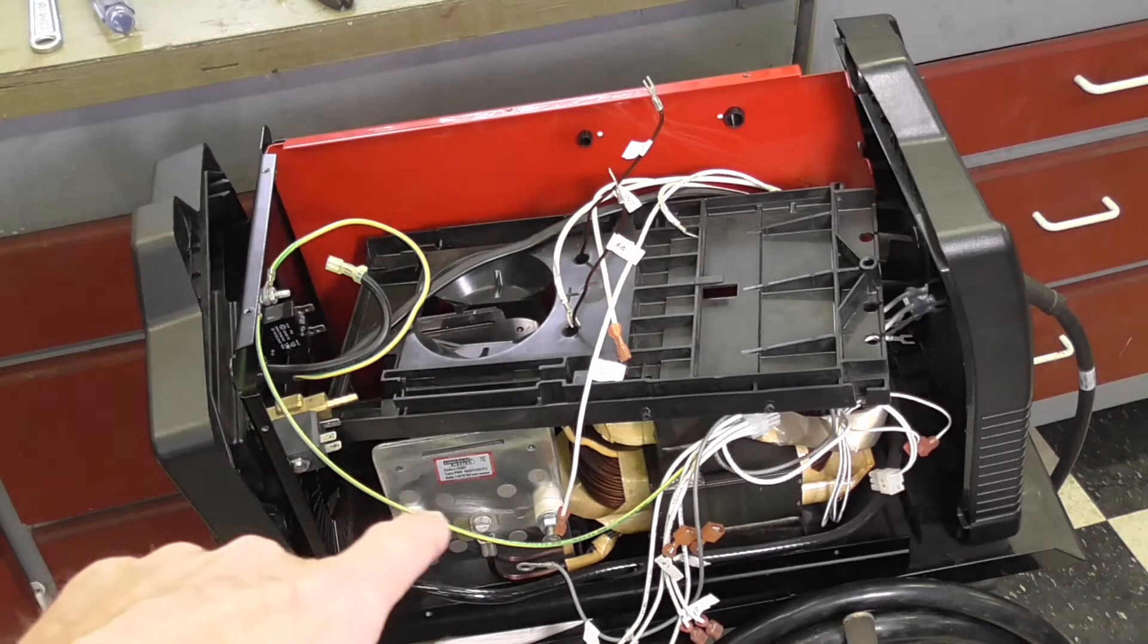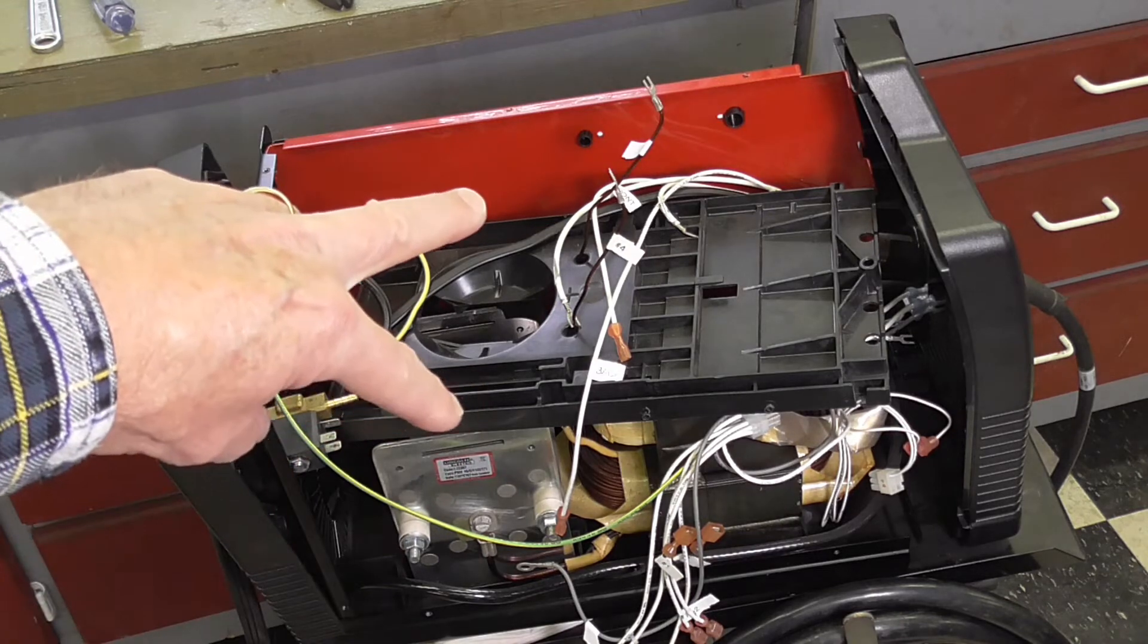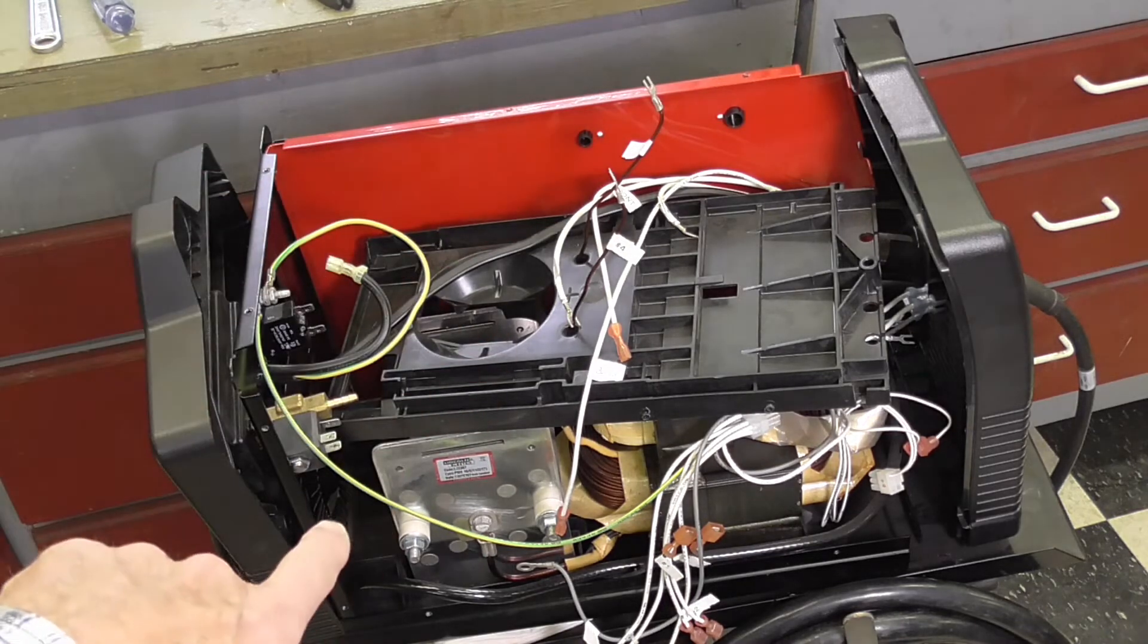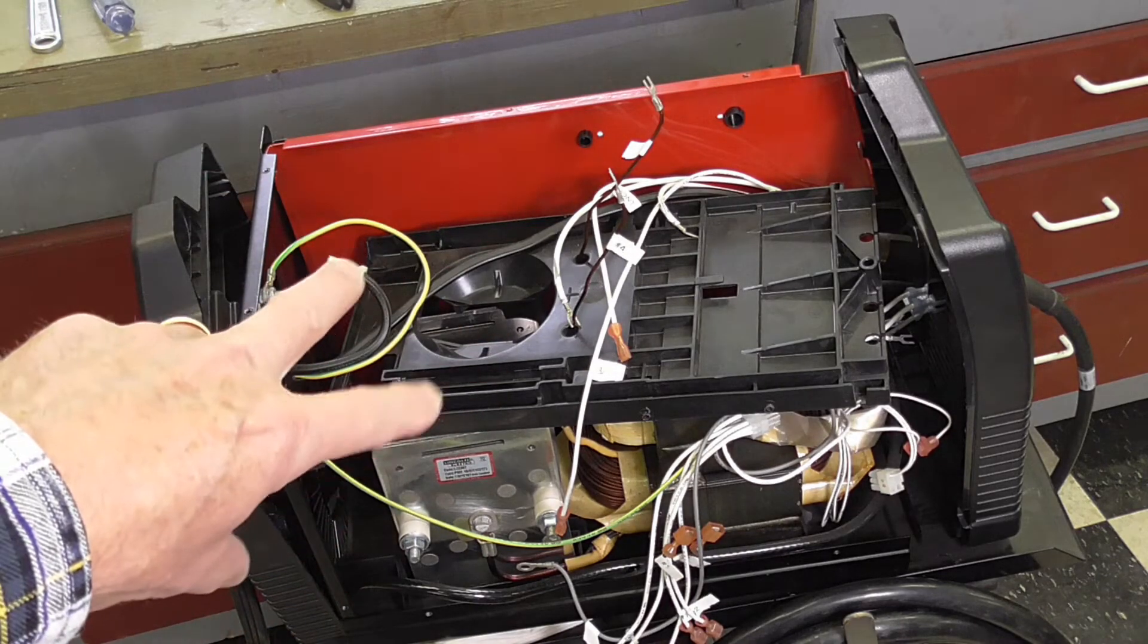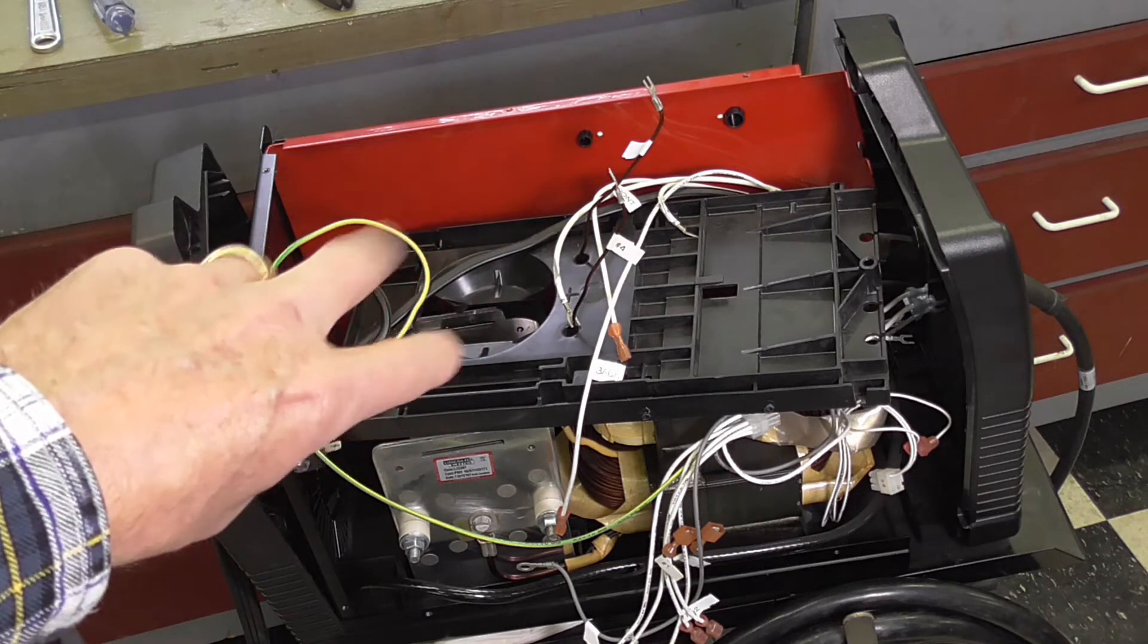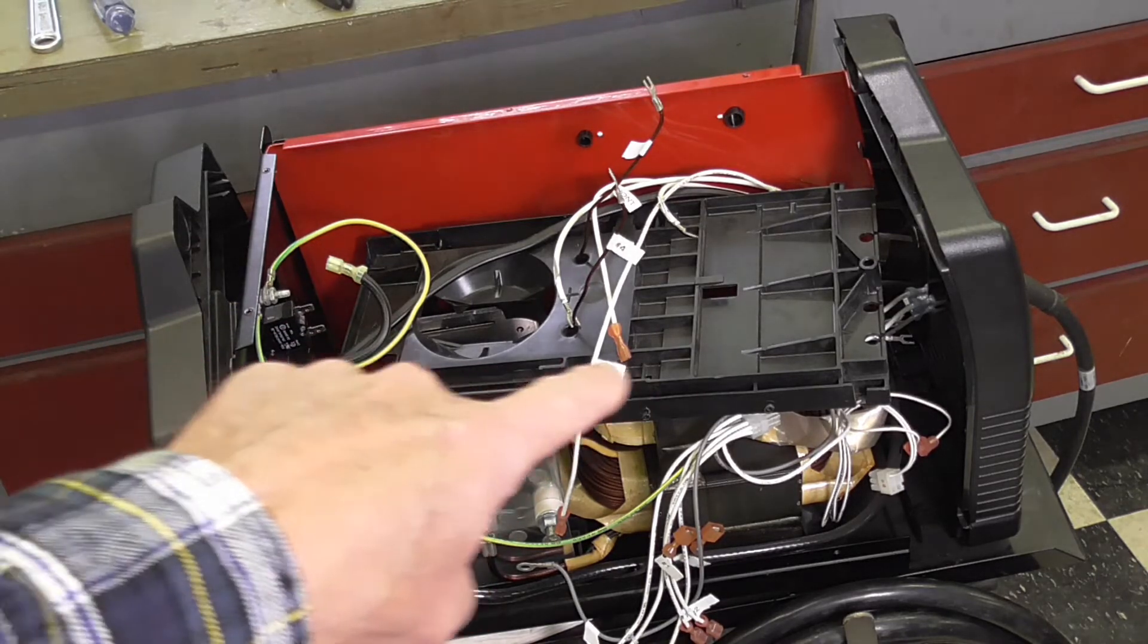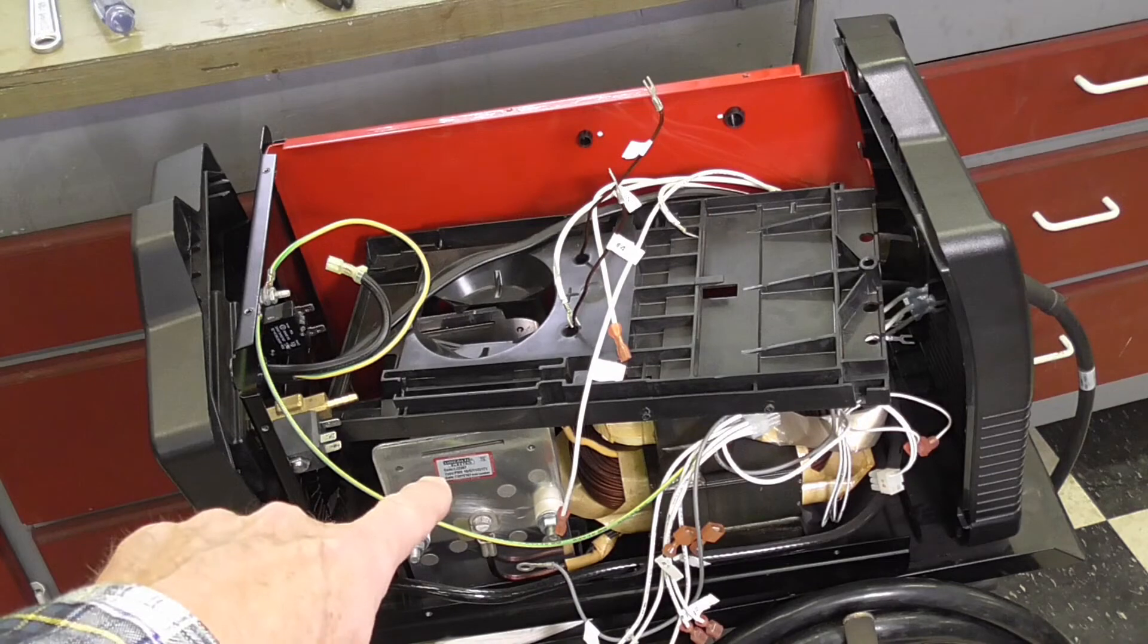And then figuring out these locking tabs there's locking tabs on each side of this tray and they're very well hidden so I had to study it for probably 10 minutes and try a couple different things before I figured out finally how those locking tabs release that upper tray from that metal plate.